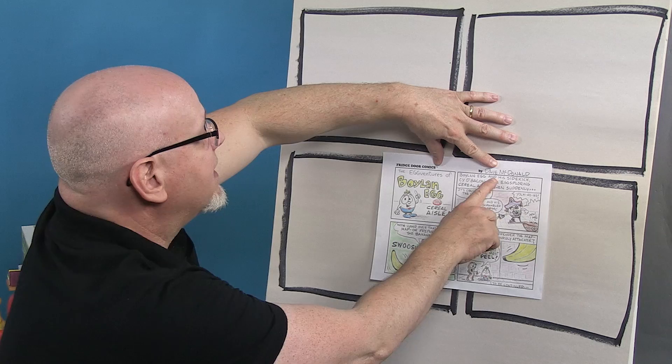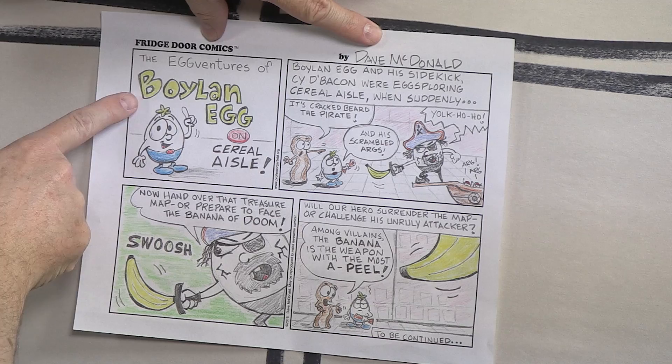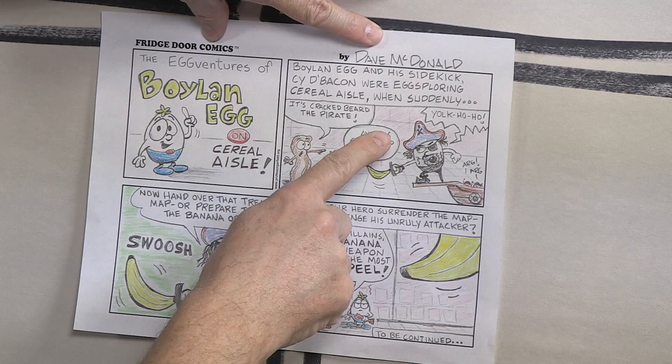Okay, let's take a look here. Four panels. Fridge Door Comics by Dave McDonald. Always put your name in there so we know who the famous artist is in your house. Start with a title panel here. Panel number one, The Egg Ventures of Boilin' Egg on Cereal Isle. I told you I like bad puns.